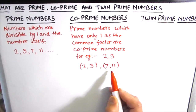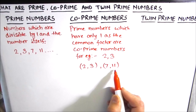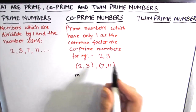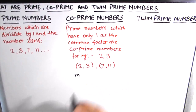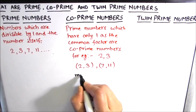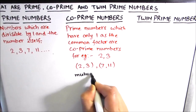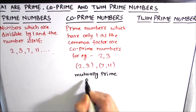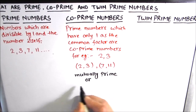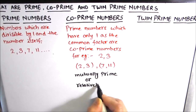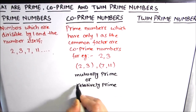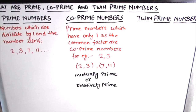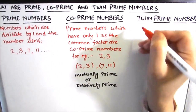7 and 11 are co-prime because they have only 1 as the common factor between them. Co-prime numbers are also called mutually prime numbers or relatively prime numbers. Now let's move on to twin prime numbers.